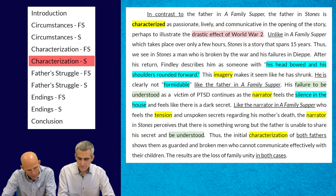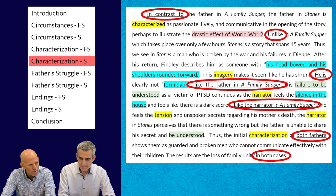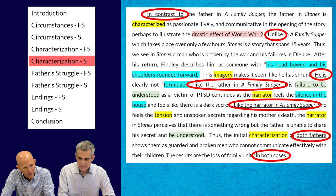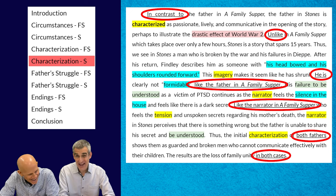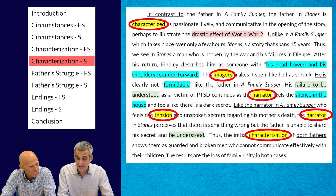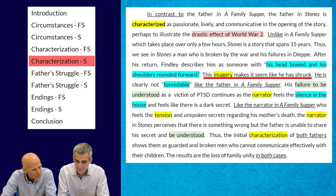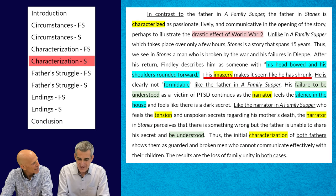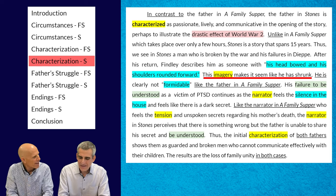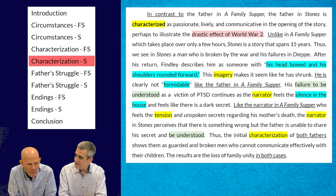The next body paragraph is our comparative paragraph — this is where we look for comparative language. All those underlined phrases: 'in contrast to,' 'unlike A Family Supper,' 'he is not formidable like the father in A Family Supper.' This person really has their comparative hat on — they understand the necessity to compare and contrast. I also see that rich literary lens — they haven't forgotten criterion B: authorial choices, characterization, imagery, narrator, tension. I like the phrase 'this imagery makes it seem like he has shrunk' — short but effective. Don't forget about variety: long sentences and short sentences.